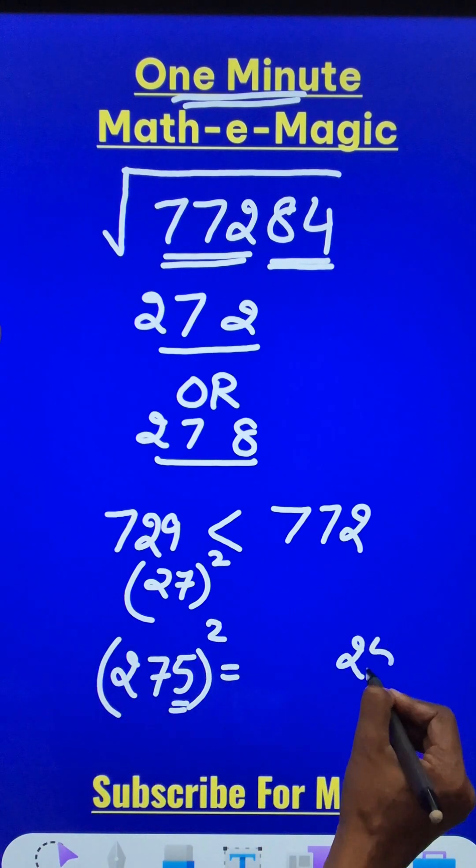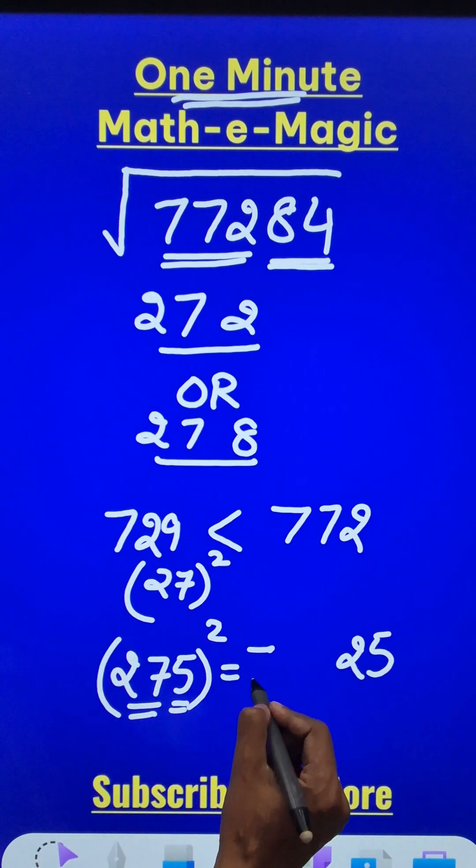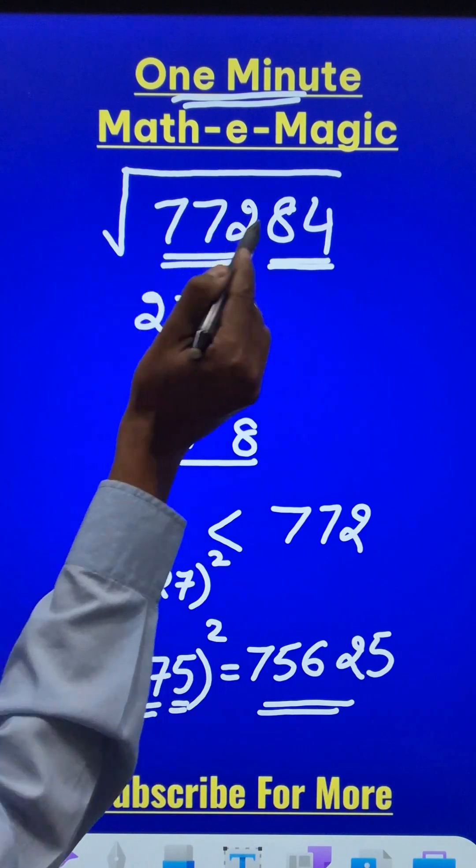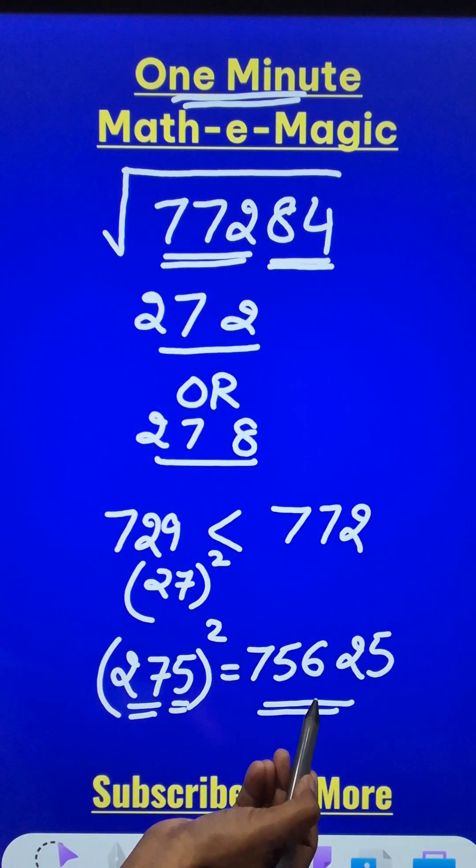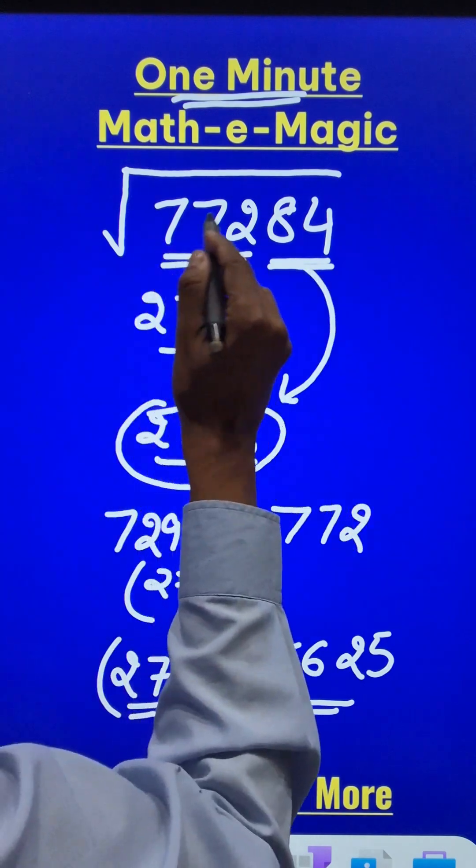5 square is 25 and 27 times 28 will give me 756. So this number now is smaller than this or our number is greater than this number. So the greater one that is 278 will be the square root of 77284.